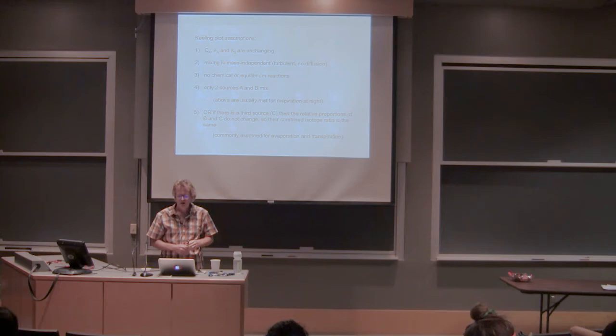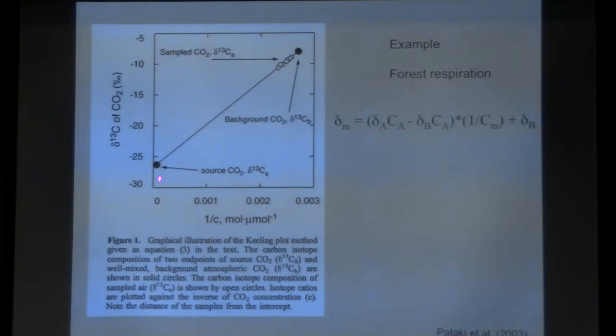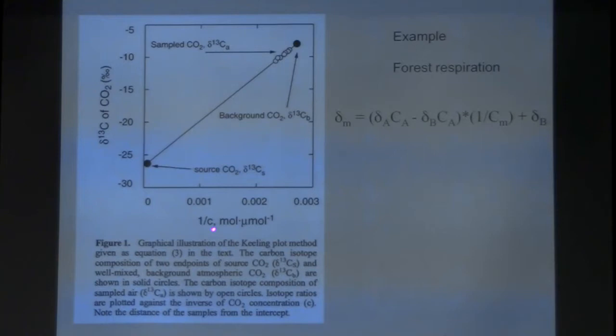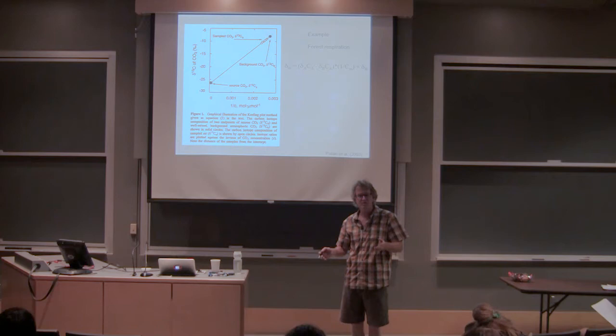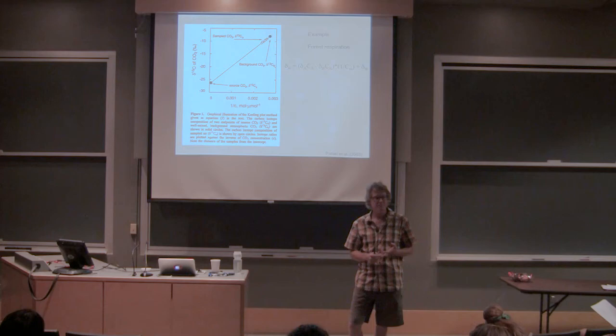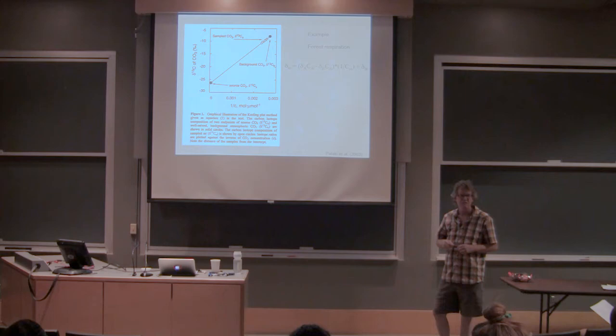Here is a real example from data in the paper by Diane Pataki (2003). The carbon isotope ratio of CO2 is plotted against the inverse of the measured CO2 concentration — 1/C_M. The white dots are actual measurements, ultimately plotting as a straight line. This was a forest measurement made at night when there is no photosynthesis. By looking at the change in CO2 and the change in the carbon isotope ratio, a regression through this line gives the isotopic signature of respiration from the whole forest — that is a Keeling plot.